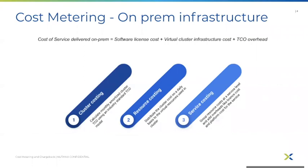The focus of this video is to help you understand how the cost metering logic works. In an on-prem infrastructure, the end-user services like virtual machines are provided by the central IT department. Hence, the cost of service delivered on-prem is the license cost of software used to set up the cluster, the virtual cluster infrastructure cost, and the TCO overhead like power, cooling, administration, etc.